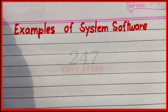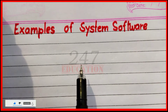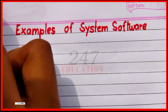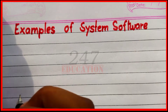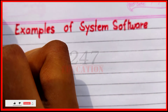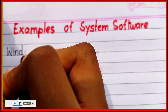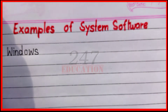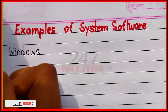Hello everyone, today we learn about examples of system software — 10 examples of system software. Starting with the first: Windows. The first example of system software is Windows.